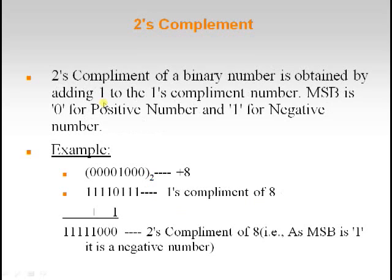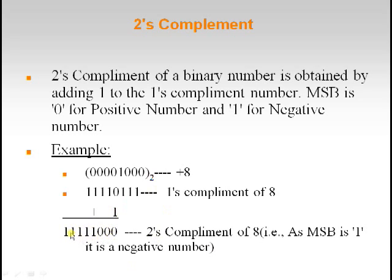Now let us see 2's complement. The 2's complement of a binary number is obtained by adding 1 to the 1's complement number. MSB is 0 for positive and 1 for negative. Positive numbers are represented the same way with MSB 0. For a negative number, take the 1's complement of the number and add 1 — the result is the 2's complement. As the MSB is 1, it is considered a negative number.